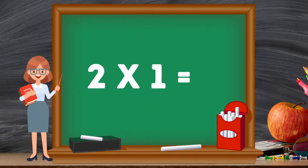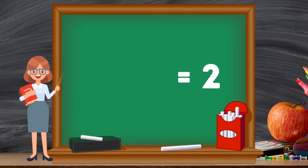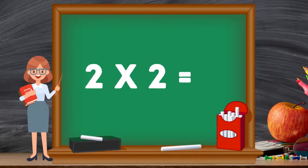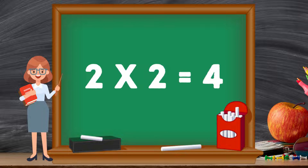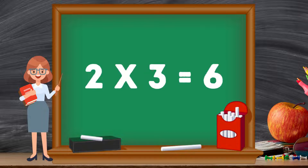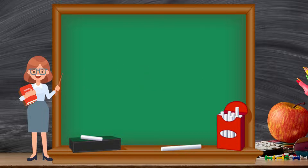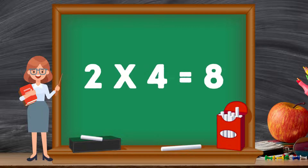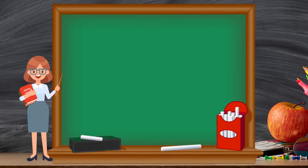Two ones are two, two ones are two. Two twos are four, two twos are four. Two threes are six, two threes are six. Two fours are eight, two fours are eight.